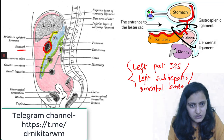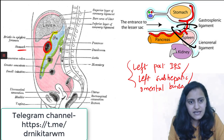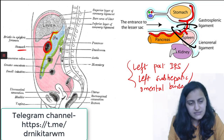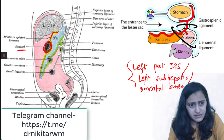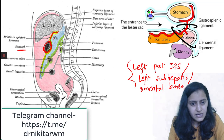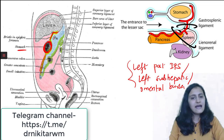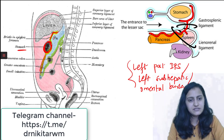What are the anterior relations of the lesser sac? From above downward, you can see there is the liver, then the lesser omentum between the stomach and the liver, then the stomach itself anteriorly, and then the anterior two leaflets of the greater omentum. So these structures form the anterior relations of the lesser sac.